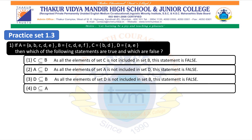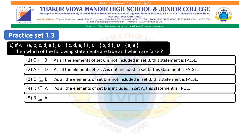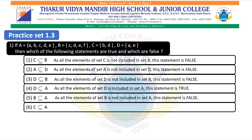Fourth statement: D is a subset of A. The elements of set D are A and E. Whether A and E are part of set A — yes, A and E are included in set A. It means D is a subset of A. As all the elements of D are included in set A, this statement is true. Fifth statement: C is a subset of A — as all the elements of set B are not included in A, this statement is false. Sixth statement: C is a subset of A. C contains two elements, B and D, which are part of set A. Therefore, as all the elements of C are included in set A, this statement is true.